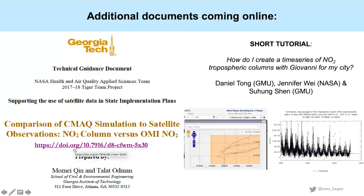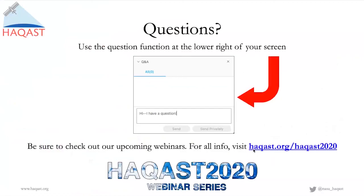In addition, we're going to have a short tutorial to come back more along the lines of Xiaoming's tutorial — on how to create a time series of NO2 tropospheric columns with Giovanni for a particular city. This was co-authored by Daniel Tong, one of the HACAST PIs, as well as Jennifer Wei at NASA and Xu Hong Shen at George Mason University. This is an example of the kinds of plots that probably look very familiar to you after seeing Xiaoming's presentation. With that, we'd like to use the rest of our time for questions and we look forward to the discussion — thank you very much for your attention.